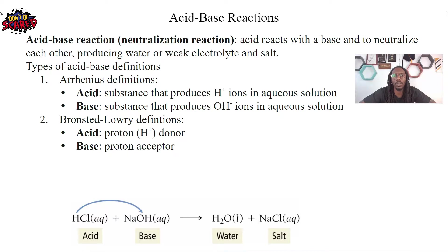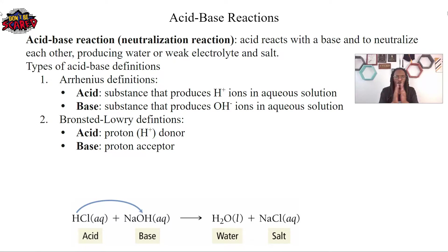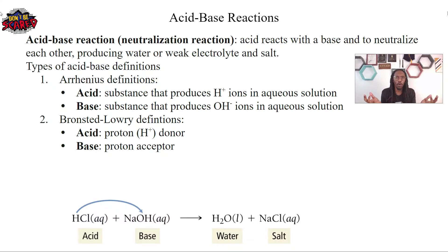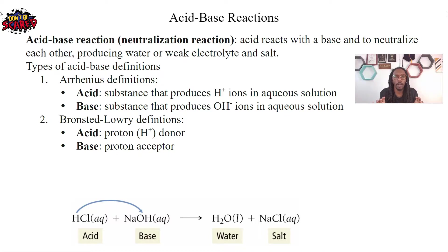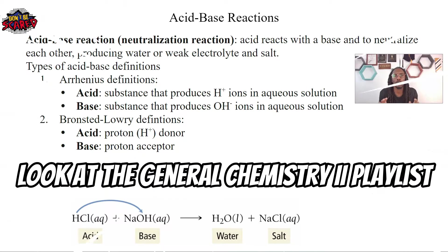This is basically when we're going to take our acid and react it with the base. Those two are going to come together to neutralize each other, in which we're able to produce water or a weak electrolyte and salt. Today we're just going to cover the very simple basis of it. If you want to learn more about producing that weak electrolyte and salt, I highly recommend looking at the General Chemistry 2 playlist.